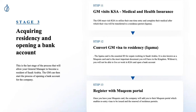A key tip: to get local health insurance, you need to pay from a Saudi bank account — another potential catch-22 since you don't have a bank account yet without a GM in place. AstroLabs will cover this from our Saudi account, producing the Sadad number needed to pay for the health insurance.